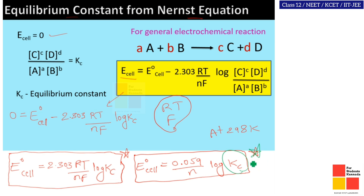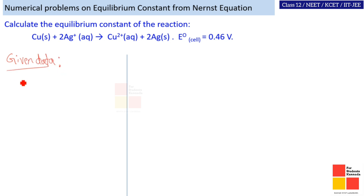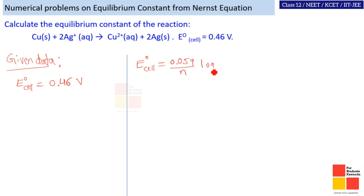To find out Kc, we mainly use this equation. Let's solve one problem to calculate the equilibrium constant of the reaction. The given data: E naught cell is equal to 0.46 volts. Using the equation E naught cell equals 0.059 divided by n, log Kc, we have to find out Kc.